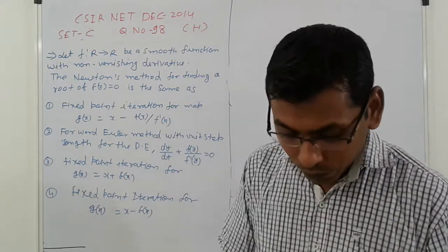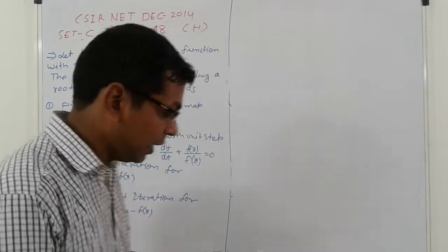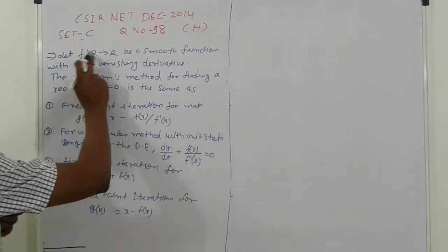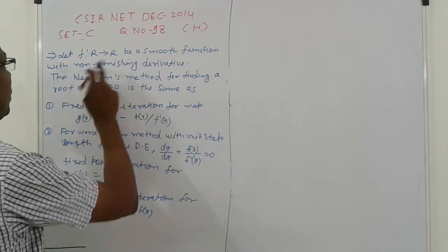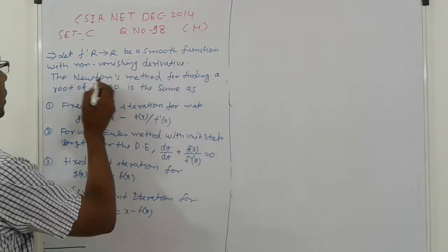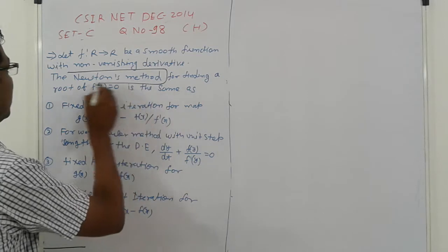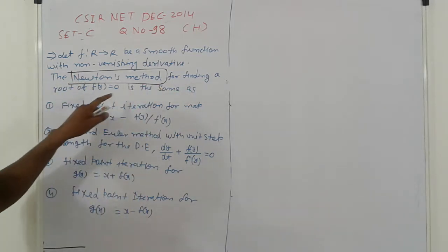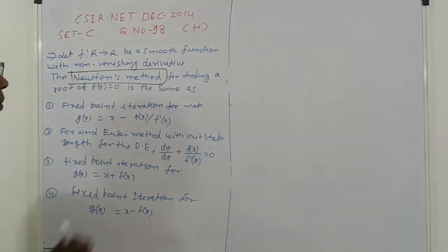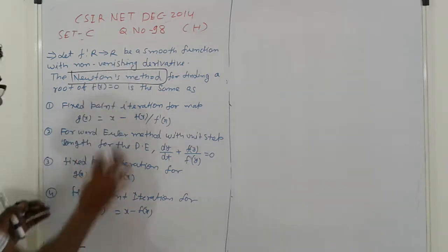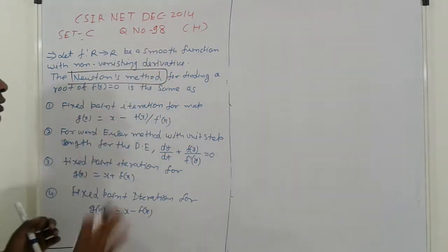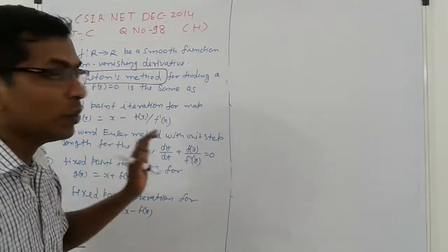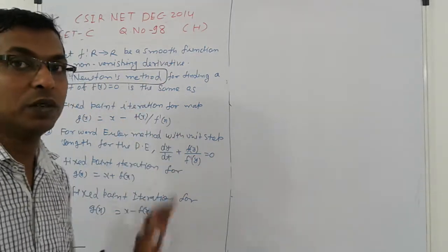So now, the topic first: the question is given about an absolute and smooth function with a non-vanishing derivative. Newton's methods for finding roots — which of these four options can satisfy Newton's methods? We need to find out.